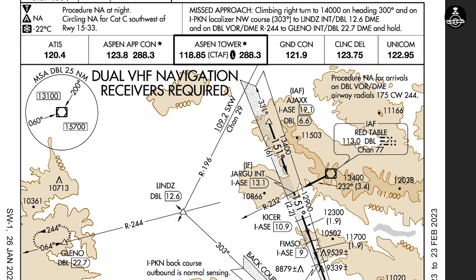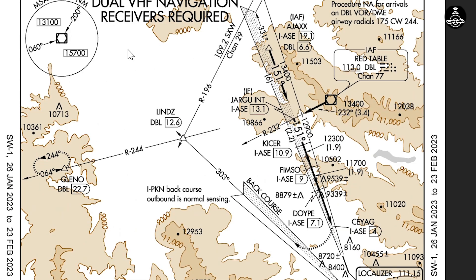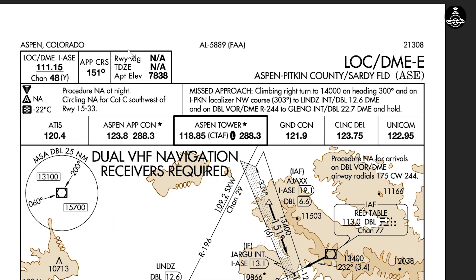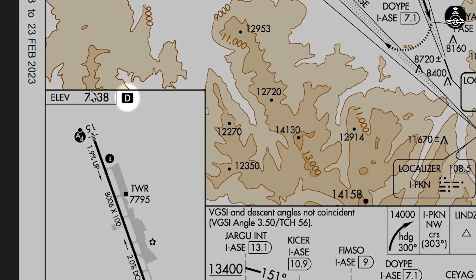You should advise ATC with the altitude correction, though advising ATC is not required in the final segment. For more guidance see AIM Chapter 7, where you'll find how to do the altitude correction. Basically, if the temperature goes below negative 22 degrees Celsius at this airport, you would have to do some altitude correction because of really cold weather.